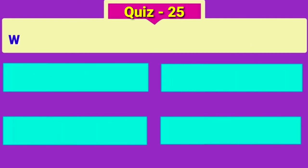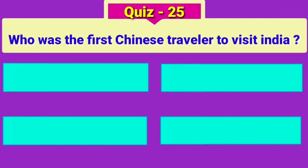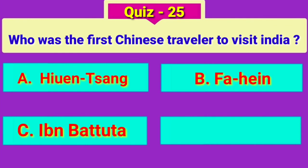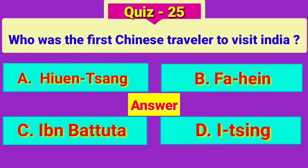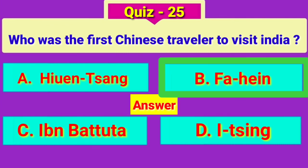Question number 25. Who was the first Chinese traveler to visit India? Answer: Fa Hien.